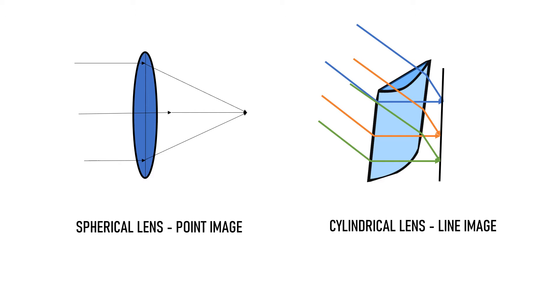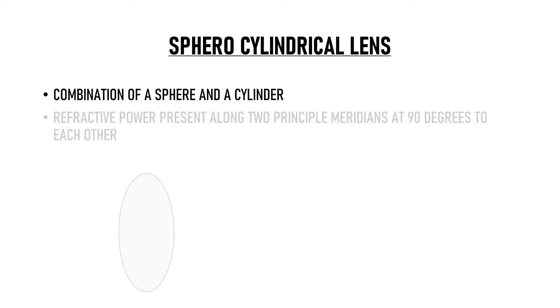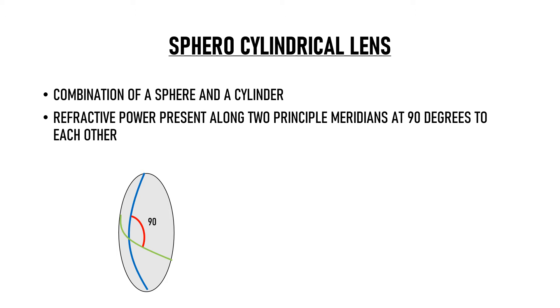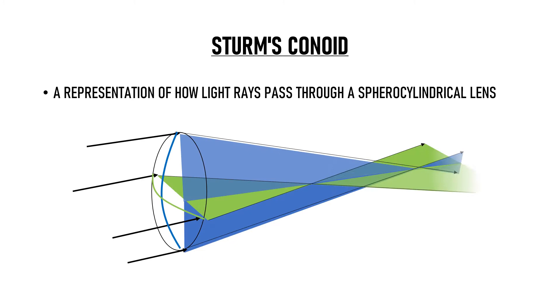Now what happens when rays pass through a spherocylindrical lens? A spherocylindrical lens is a combination of a sphere and a cylinder. It has refractive power present along two principal meridians that are at 90 degrees to each other. It is also known as an astigmatic lens or a toric lens. Sturm's conoid is a representation of how light rays pass through a spherocylindrical lens.